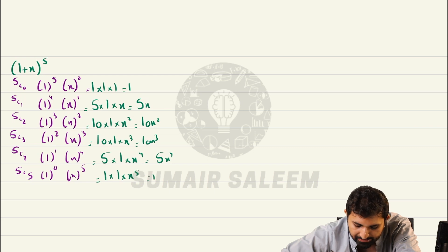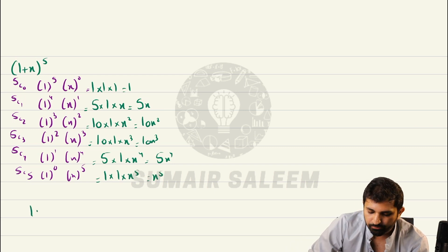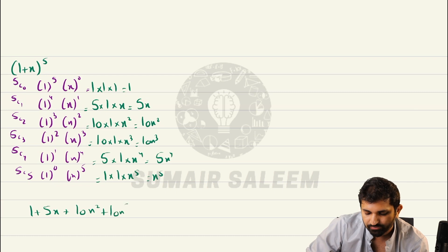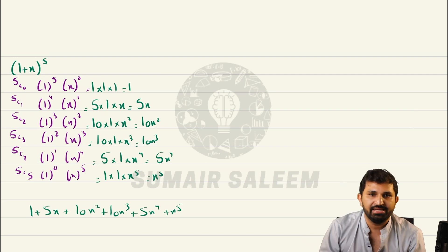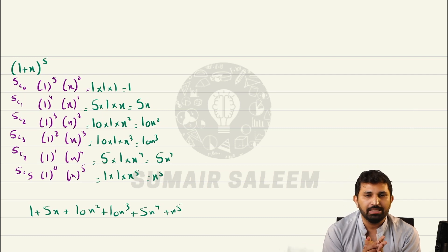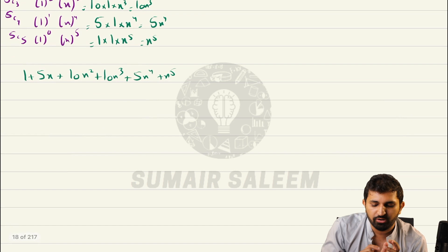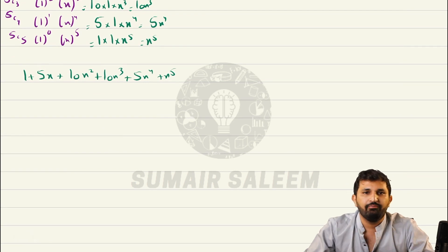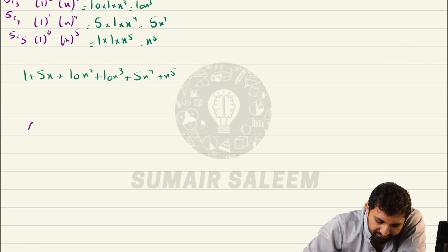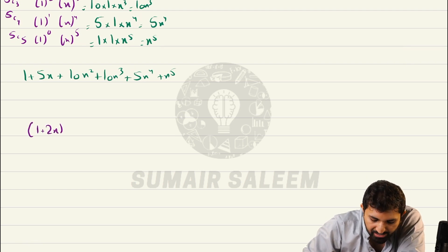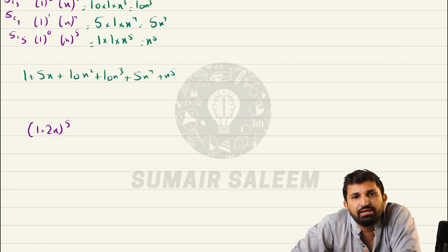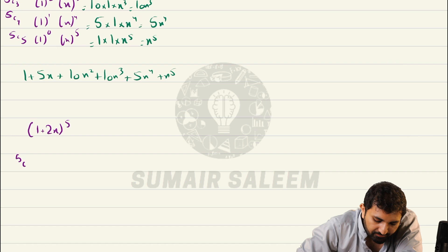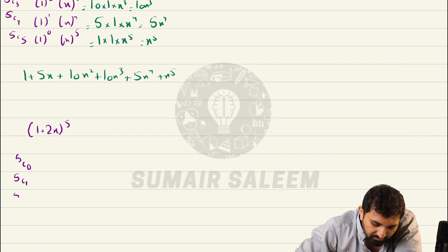So guys, has the full expansion of this chapter been understood? Is there any problem so far? The first thing we learned in this class is the full expansion of the binomial theorem. But the examiner in most questions does not ask for the full expansion — they ask for the first three terms. For example, the question is 1 plus 2x to the power 5 and the examiner asks for the first three terms. So we write: 5C0, 5C1, 5C2.